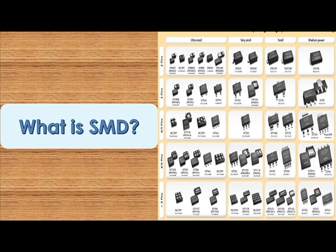Broadly, the package styles can be fitted into three categories: passive components, transistors and diodes, and integrated circuits.